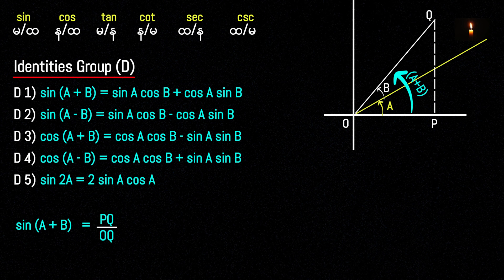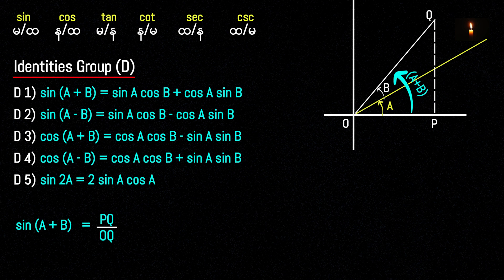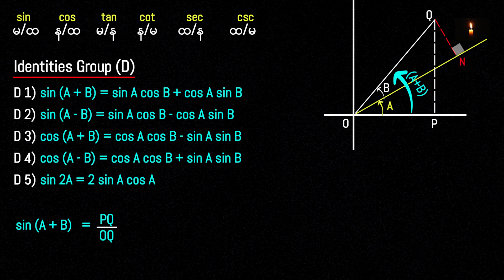When you have the construction line, you may see some of the structures. When you write, some structures are marked. There are different units from the structure. This is the first step.